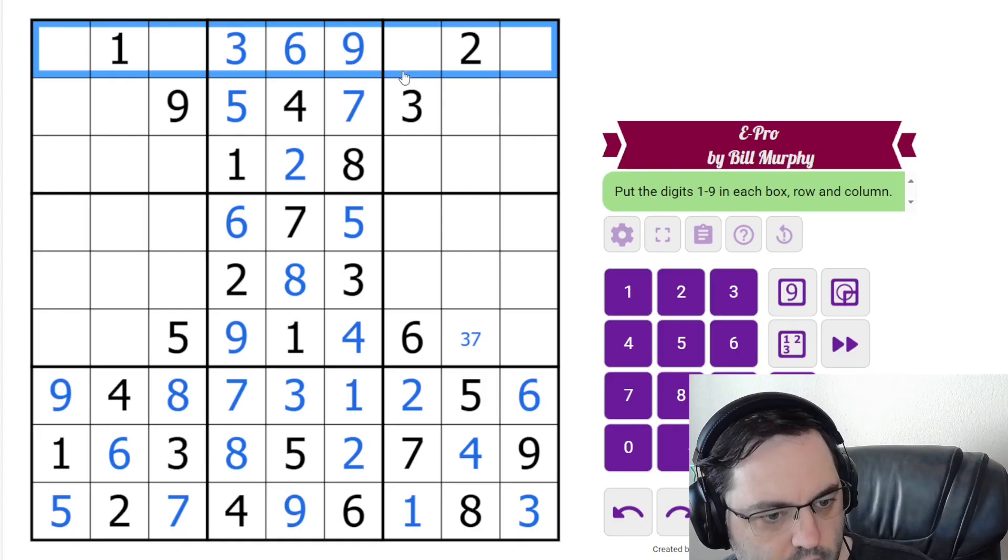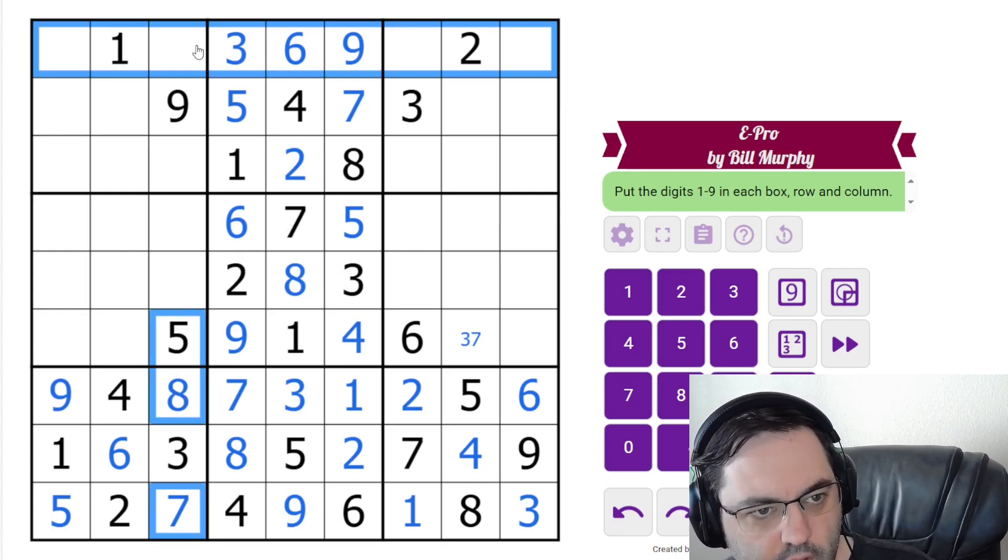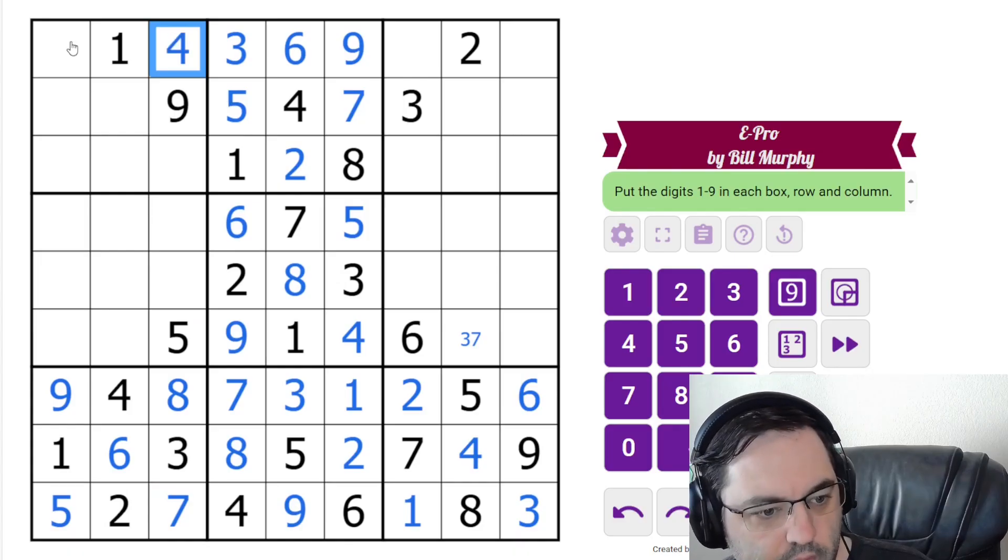It must be somewhere else I need to look. How about here? 4, 5, 7, 8 here. I think I said an extra digit over here. Anyway, there's a 7, 5, 8 here, so this must be 4.